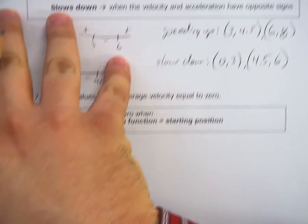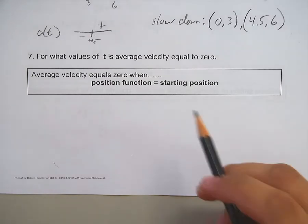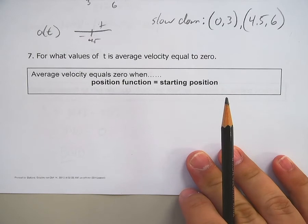So on number seven, I really like this question. Because there's not a lot of math involved. There's just a little logic. For what values of t is the average velocity equal to zero?